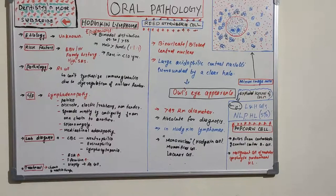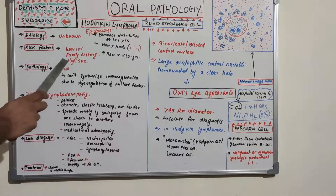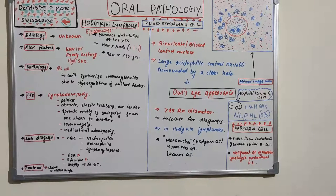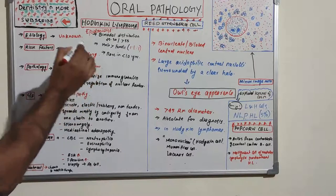Risk factors for Hodgkin's lymphoma: there is no single clear risk factor, but the most common associations are Epstein-Barr virus (EBV) and HIV. It is also seen among people involved in woodwork and farming. Family history is a significant factor — first-degree relatives have a fivefold increase in risk. Additionally, high socioeconomic status and prolonged use of human growth hormone are also noted risk factors.